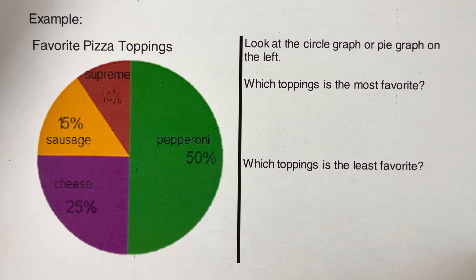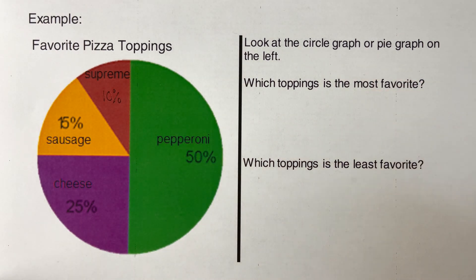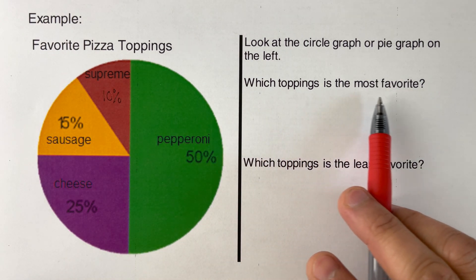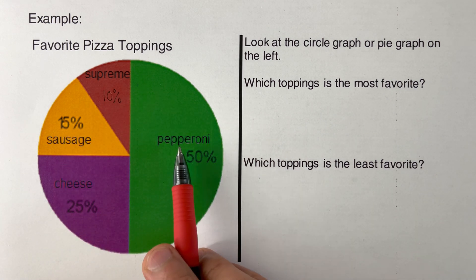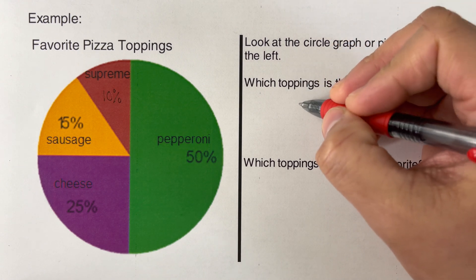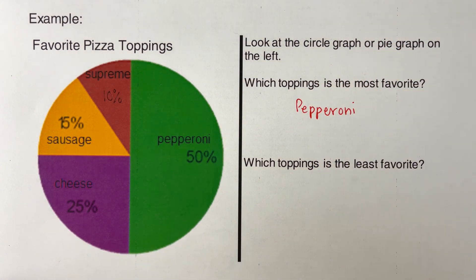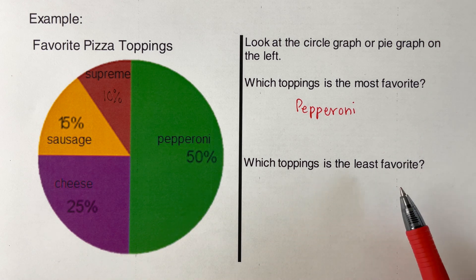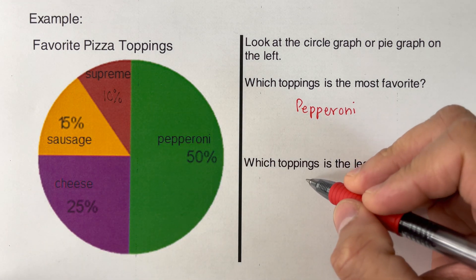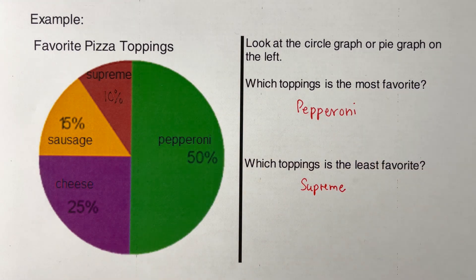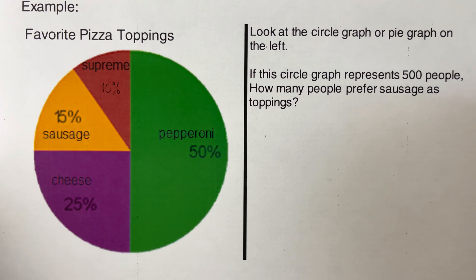Moving to the next questions using the same circle graph: which topping is most favorite? We look for the biggest percentage — that is pepperoni at 50%. Which topping is least favorite? That means the one with the smallest percentage — that is supreme at 10%.